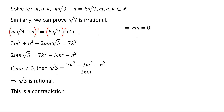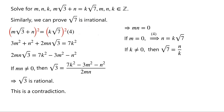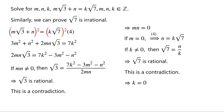This means either m or n must equal 0. If m = 0, then from the original equation we know that n = k√7. If k ≠ 0, then √7 = n/k. Since n and k are integers, this implies √7 is rational — a contradiction. So k must equal 0, and then n = 0. Hence (m, n, k) = (0, 0, 0) is a solution.